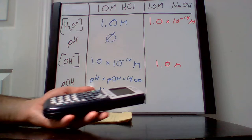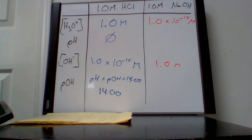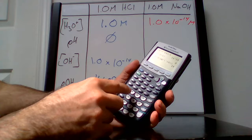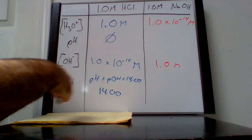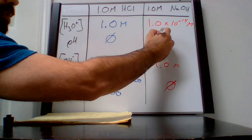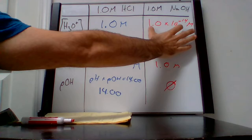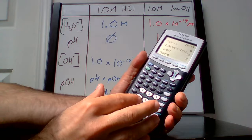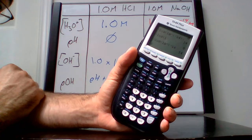For sodium hydroxide, the pOH is the negative log of the OH- concentration of 1, giving pOH of 0. To get pH, we do 14 minus the pOH, or the negative log of 1 times 10 to the negative 14, which also gives 14.